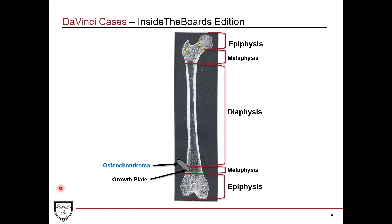Starting with benign tumors: first, osteochondroma. You can see these on x-ray as bony projections or outpouchings from the lateral aspect — these are seen in the metaphysis, around the growth plate area. They're typically in younger individuals, usually males, under 25 years of age. They're usually benign and don't transform, but they do have that potential. They usually develop in long bones around the knee. Next, osteoid osteoma — these benign lesions typically present with nighttime pain and have a central nidus or central cyst inside the mass. These are seen in the diaphysis and are typically benign.